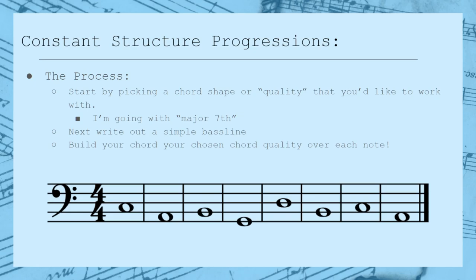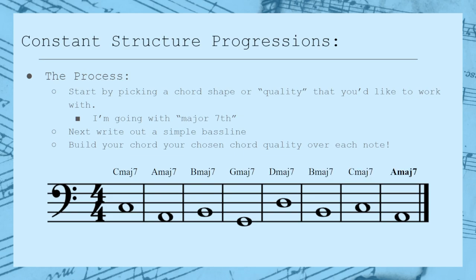In this situation, we get a chord progression that goes C major 7, A major 7, B major 7, G major 7, D major 7, B major 7, C major 7, and then A major 7.